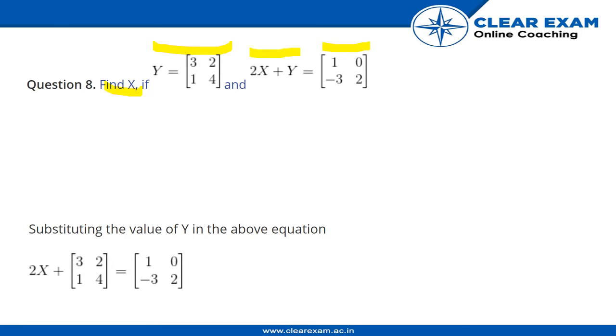One should observe that this matrix is the sum of two different matrices. Those two different matrices are 2X is one matrix and Y is one matrix. So now we have to find the matrix X. So how do we approach this question?